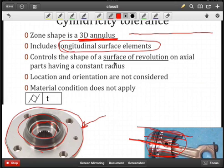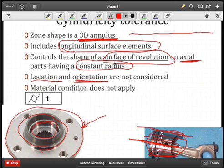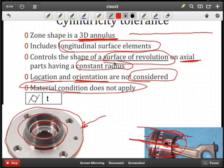Clearly, if we're going to have a cylindrical surface, we need to have a surface of revolution about an axis. And it has to be constant if it's going to be a cylinder. Location and orientation of this cylindrical tolerance zone are not considered. So they're not applicable. And also, to make life simple for you, material condition also does not apply if you're using cylindricity.